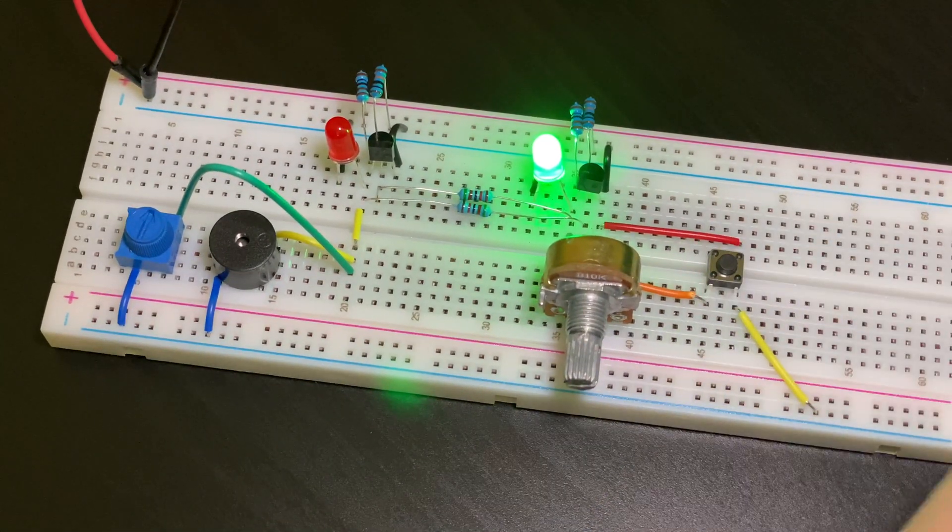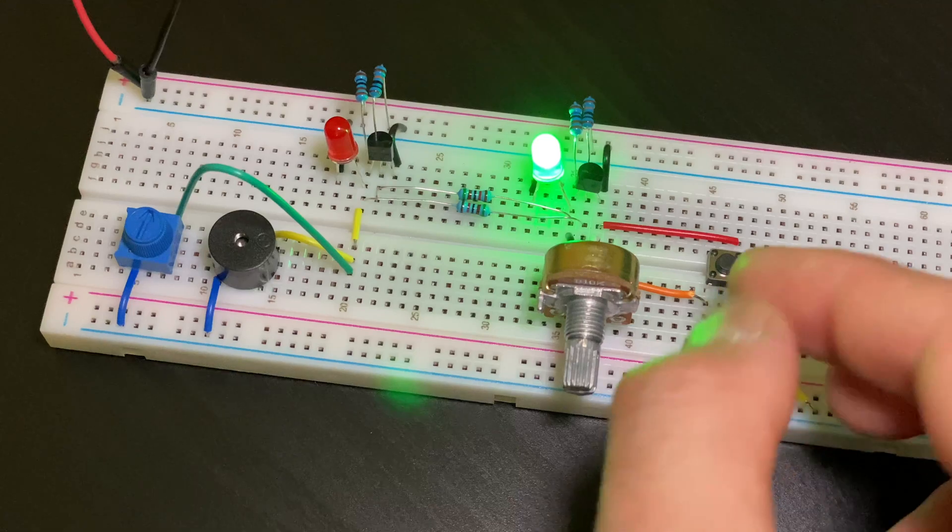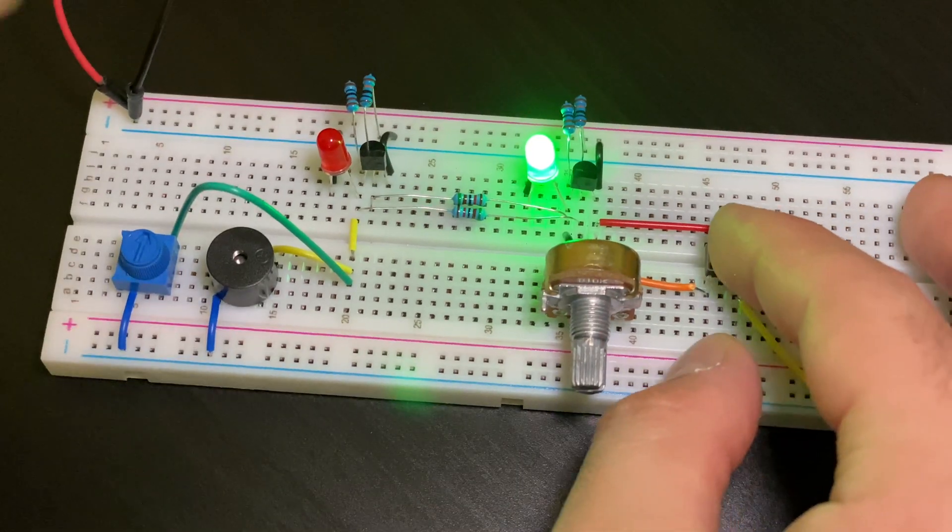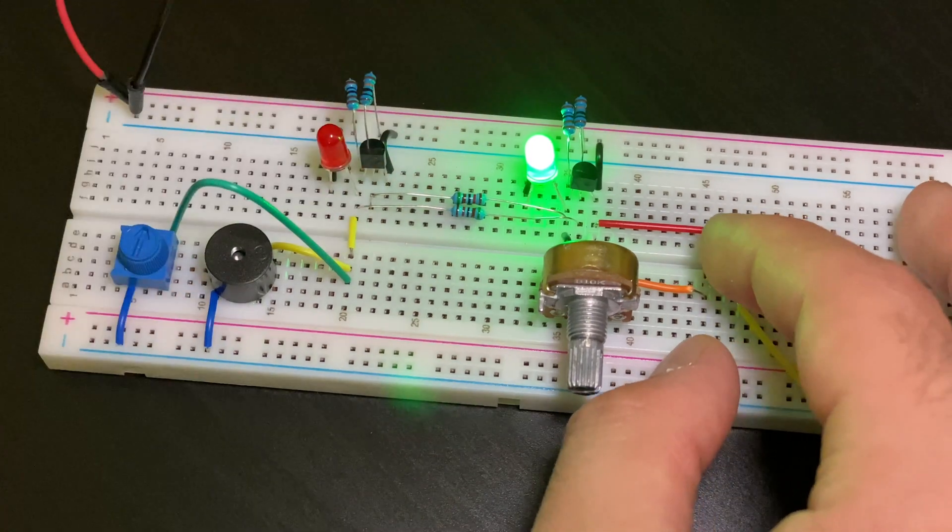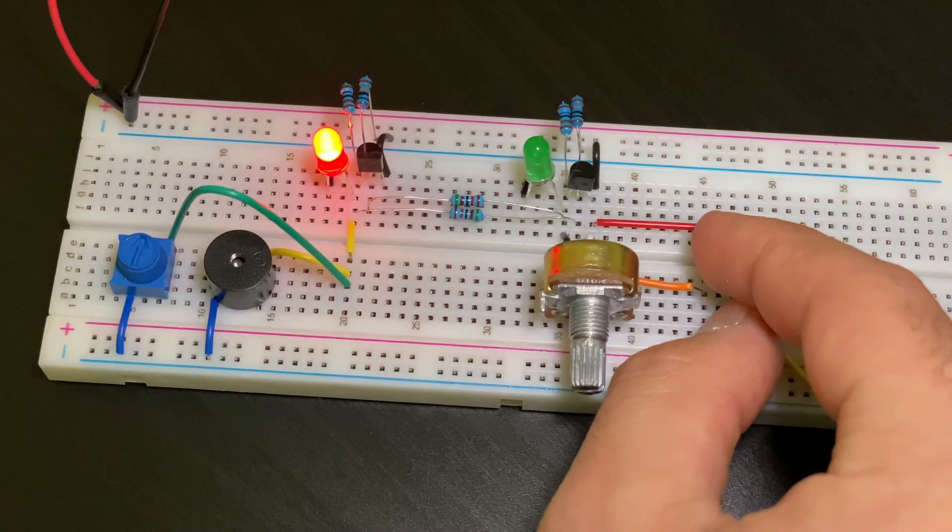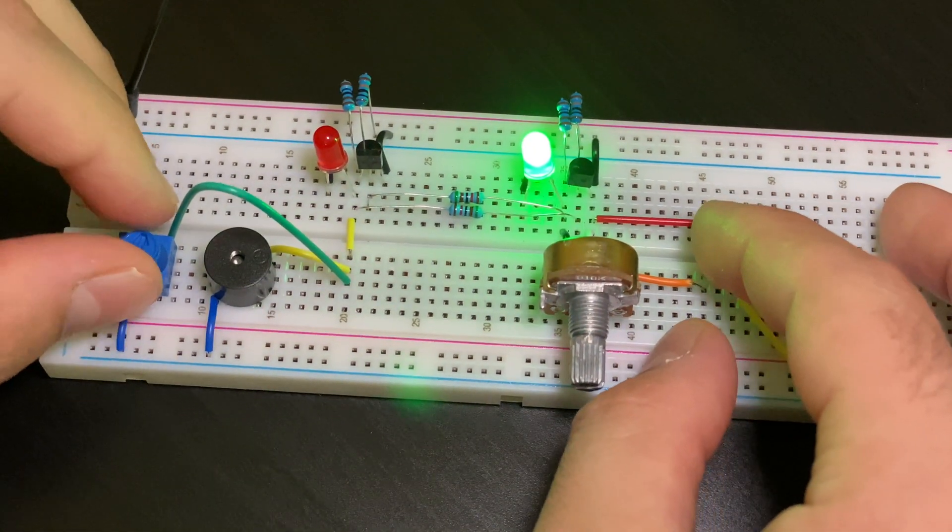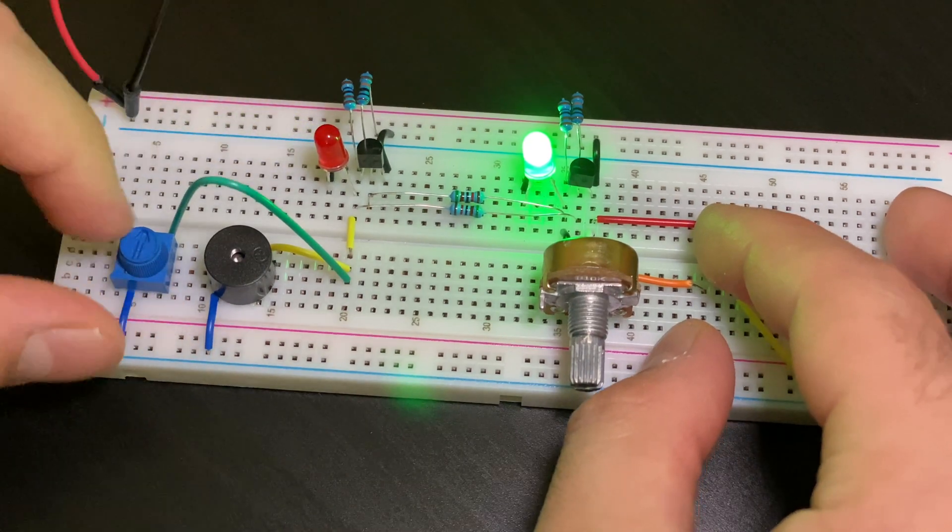Then we have a switch here. Instead of using this potentiometer which is very gradual, if you want the red light to turn on along with the sound immediately, then you would press this button. And this potentiometer would adjust this LED along with the sound.